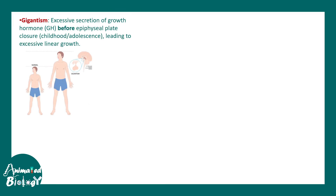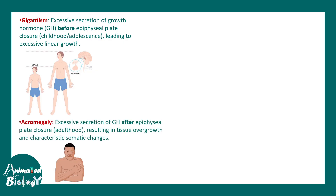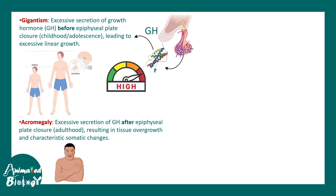There are two similar terms: gigantism and acromegaly. Both lead to excessive and uncontrolled growth, but there is a fine-line difference between them. Excessive GH secretion is common to both situations, but when the excess GH is secreted differs. In gigantism it happens during childhood or adolescence, whereas in acromegaly the excessive GH is secreted during adulthood.